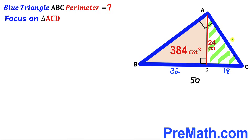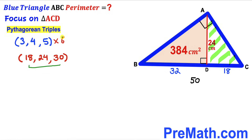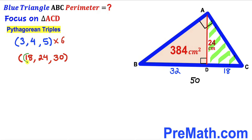We focus on triangle ACD, whose known side lengths are 18 and 24. Our task is to find side AC. Recalling the Pythagorean triplet 3-4-5 and multiplying by 6 across the board: 6×3=18, 6×4=24, and 6×5=30. Since we have 18 and 24, we conclude that AC = 30 centimeters.